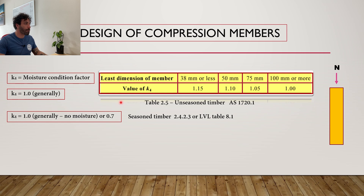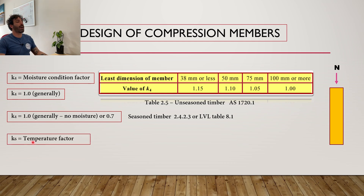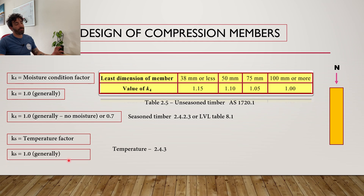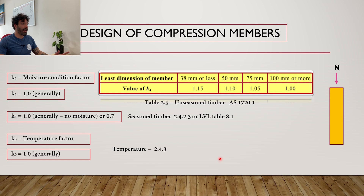k6 is the temperature factor, and it's very easy to work out. k6 equals 1 for most of Australia, unless you are in the far north like Darwin, or coastal regions of Queensland such as Cairns, Townsville, Mackay, Rockhampton, Gladstone, or Bundaberg. Just check the map in AS 1720 if you're located near these areas — in those places k6 equals 0.9.